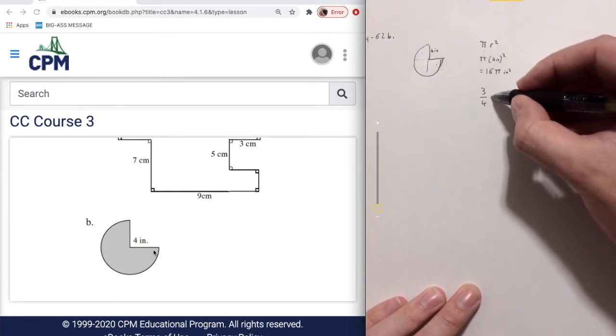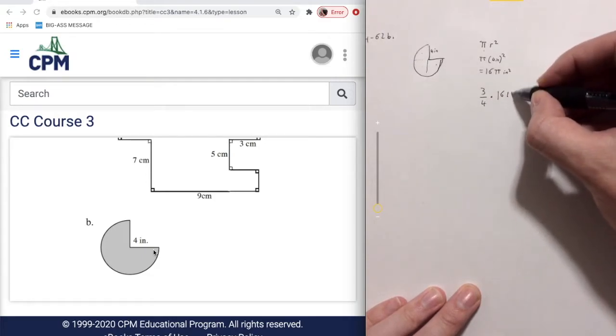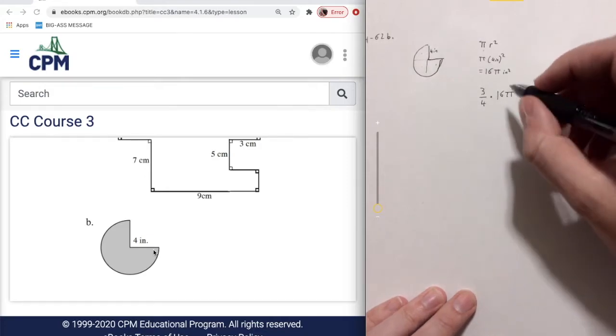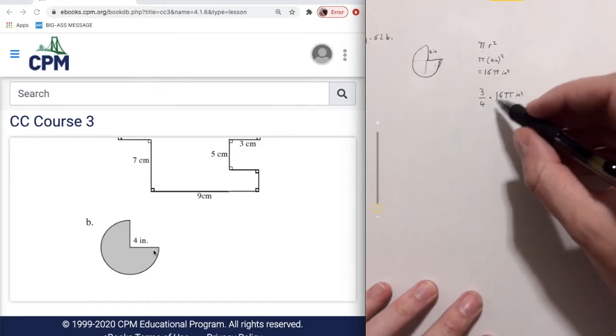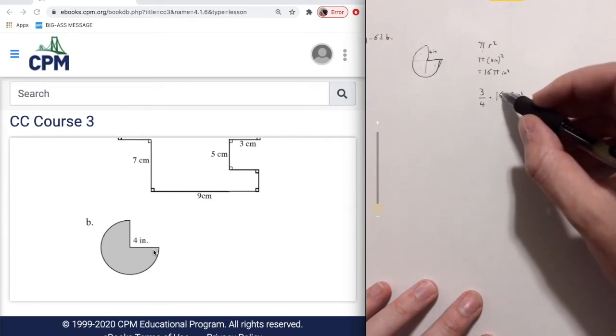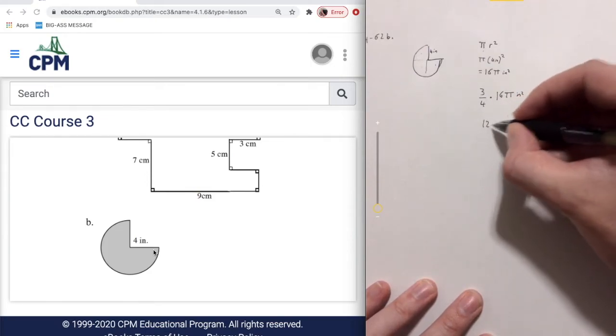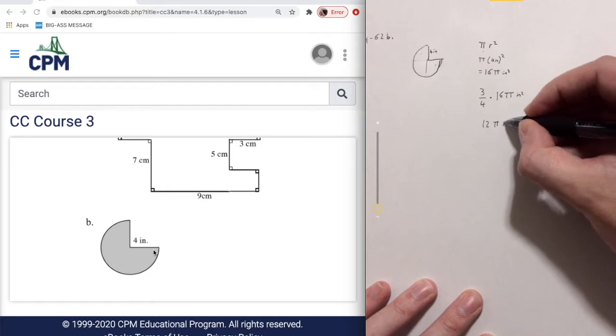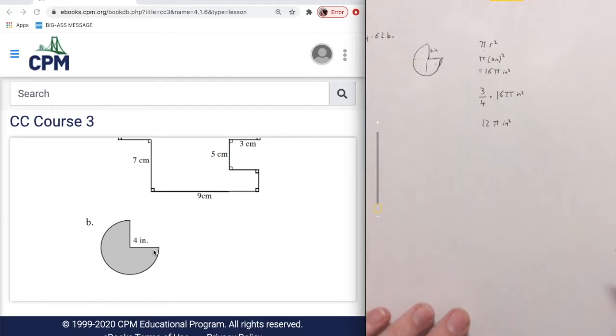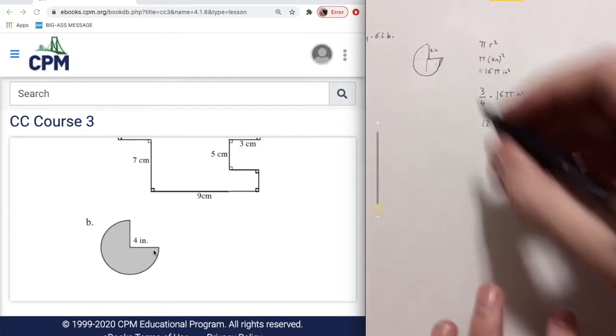It's going to be three quarters multiplied by the total circle area, which is 16 pi inches squared. And if you calculate that, 16 divided by 4, you get 12 pi inches squared would be the area.